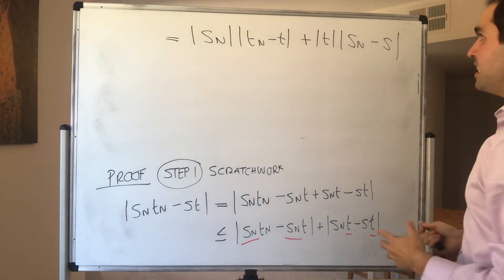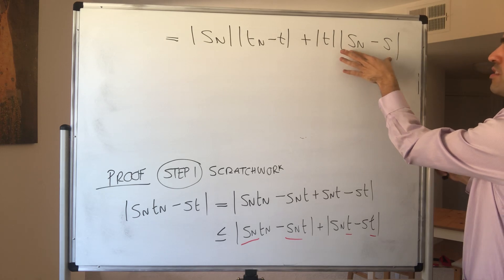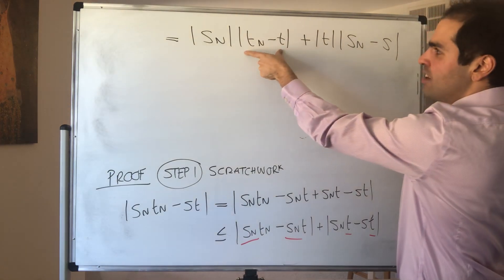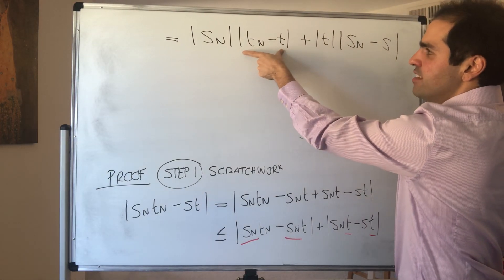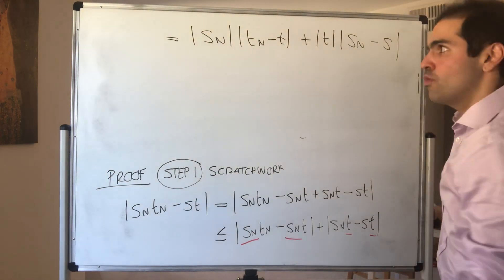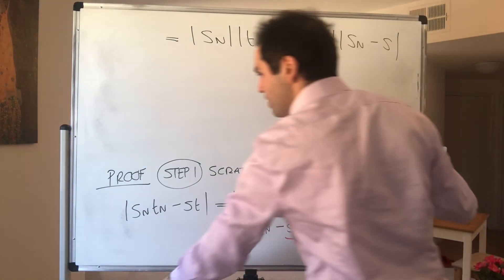Now what's the idea? We know Sn converges to S, so this is small and this is just a fixed number. But also Tn converges to T, so this is small and this is bounded because we know Sn converges. So if you take the sum of all of this, it actually becomes small. But of course, let's formalize this and execute this correctly.